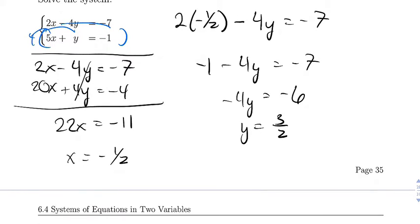Then the ordered pair for this system is going to be negative 1 half comma 3 by 2.